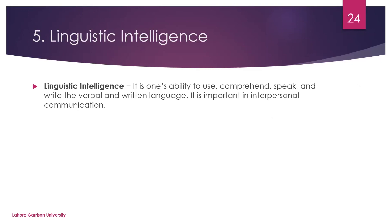The last component is linguistic intelligence. As seen in examples like the Turing machine, natural language processing, and speech recognition, this intelligence gives machines the ability to speak, comprehend, and write in verbal and written language. It is very important in interpersonal communication and is also a key part of AI.